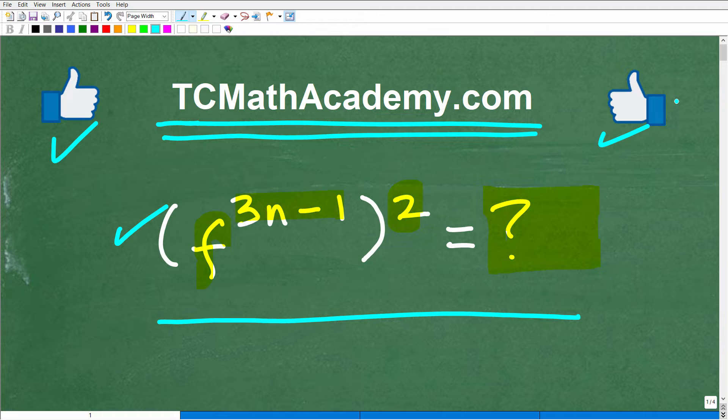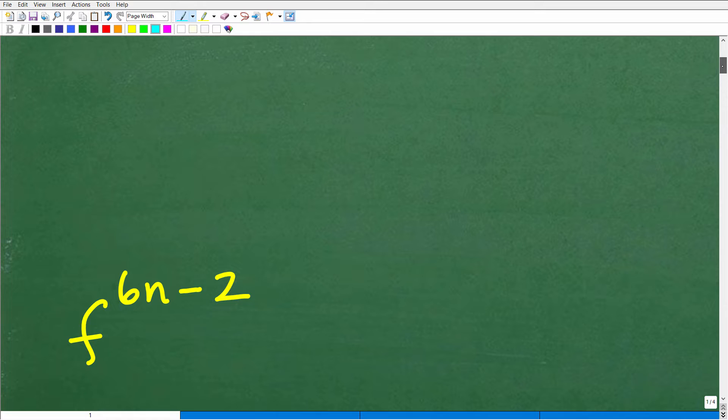Okay, so let's take a look at the answer. Again, we have f to the 3n minus 1 power squared. We want to simplify that. What is the answer? Well, here it is right here.